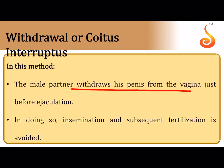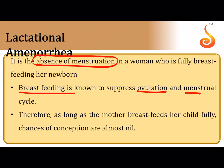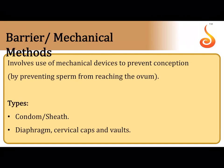In withdrawal (coitus interruptus), the male partner withdraws the penis before ejaculation so it does not occur inside the female reproductive tract, reducing chances of conception. In lactational amenorrhea, there is complete absence of menstruation in a woman who is fully breastfeeding. As long as she is fully breastfeeding, there is no ovulation, and therefore no chance of conception even after sexual intercourse. Natural methods have no side effects but have a high failure rate.